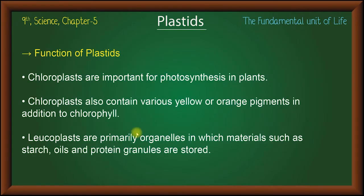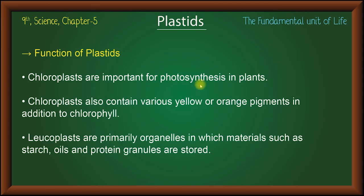The function of plastids: plastids are important for photosynthesis in plants. Chloroplasts use chlorophyll for photosynthesis. Chloroplasts also contain various yellow and orange pigments in addition to chlorophyll.